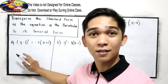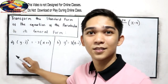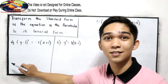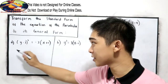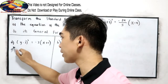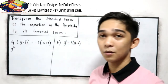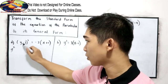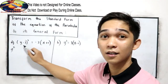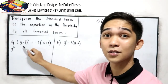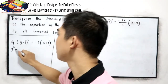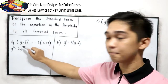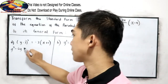We have a square of a binomial, so we need to expand. Square the first term: that will be y squared. Multiply the first term and the second term times 2: y times negative 3 is negative 3y, times 2 gives negative 6y. Square the second term: positive 9.